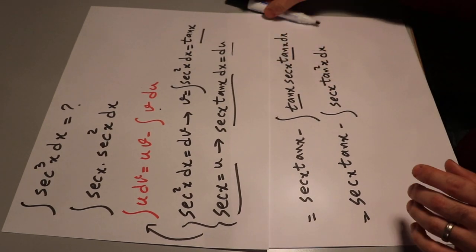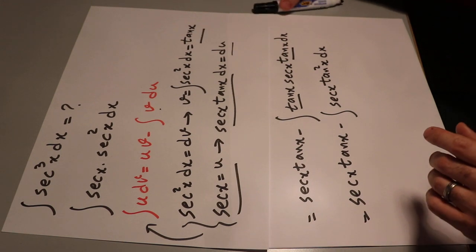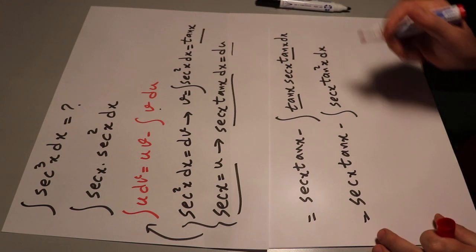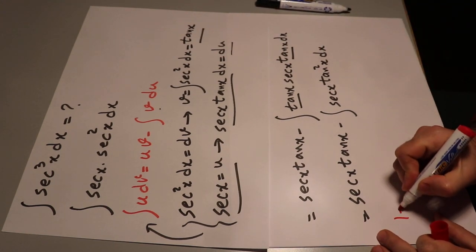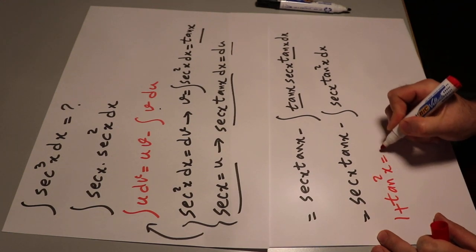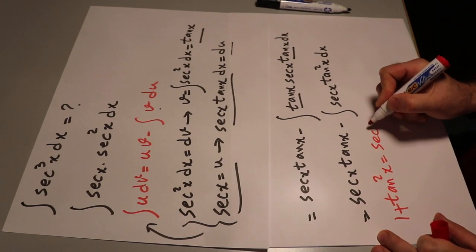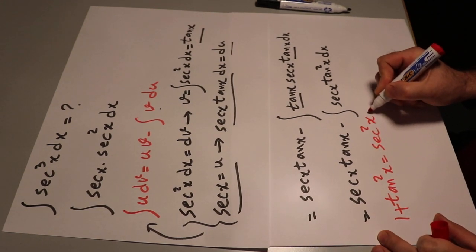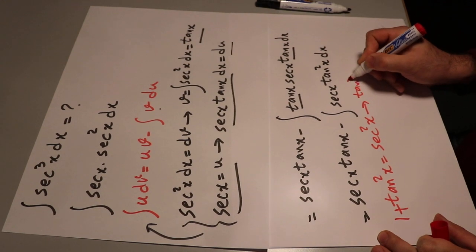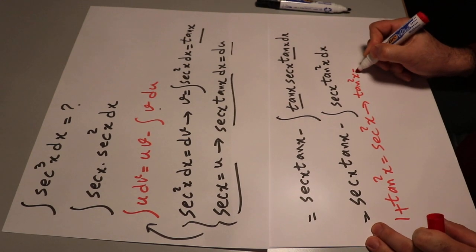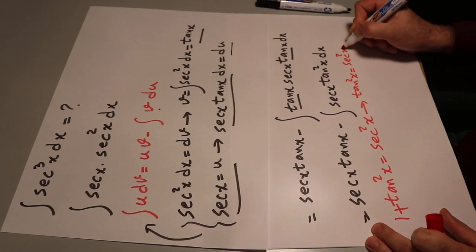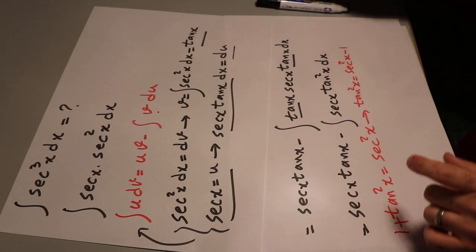From trigonometry you should know that 1 plus tangent²x is equal to secant²x, therefore tangent²x will be equal to secant²x minus 1.